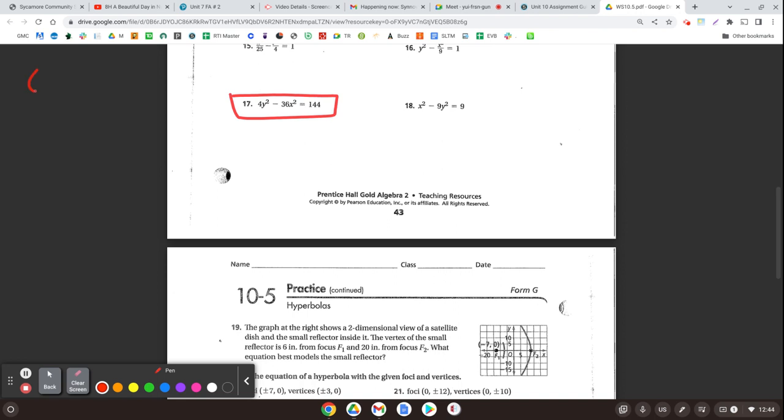Standard form is x minus h squared over a squared plus y minus k squared over b squared equals 1. And if we wanted to find c... hold on Drew, I already messed something up. This is not a plus, this is a minus because we're dealing with hyperbolas.